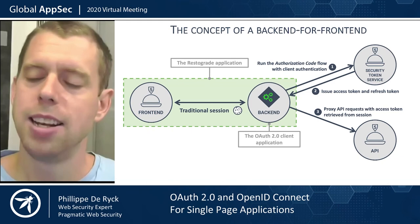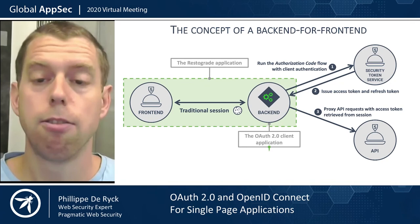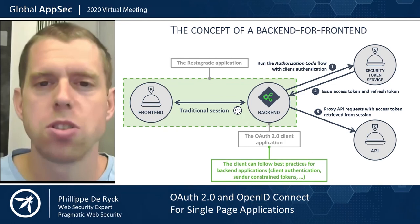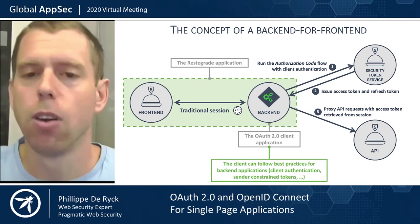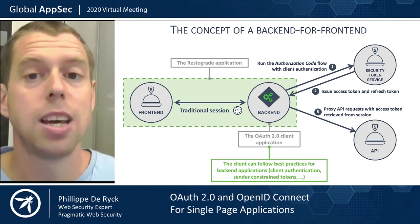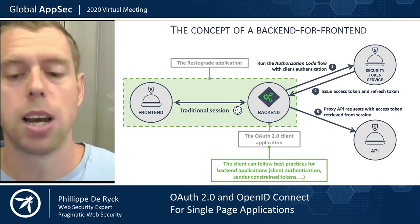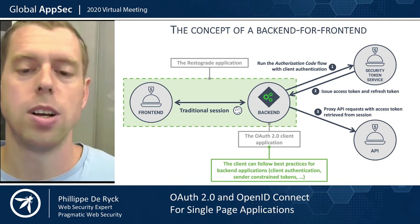That's what we call a BFF, and this is better because now tokens remain in the backend. Additionally, the backend can follow OAuth security best practices for backend web applications, which are much more secure than those for frontend applications. Two examples: we must use client authentication — a client ID and secret or key-based authentication for every flow with a security token service — which is a major improvement for security. Also, we can use sender-constrained tokens, a proof-of-possession mechanism that prevents someone with a stolen access token from using it without knowing a secret that only the backend knows.